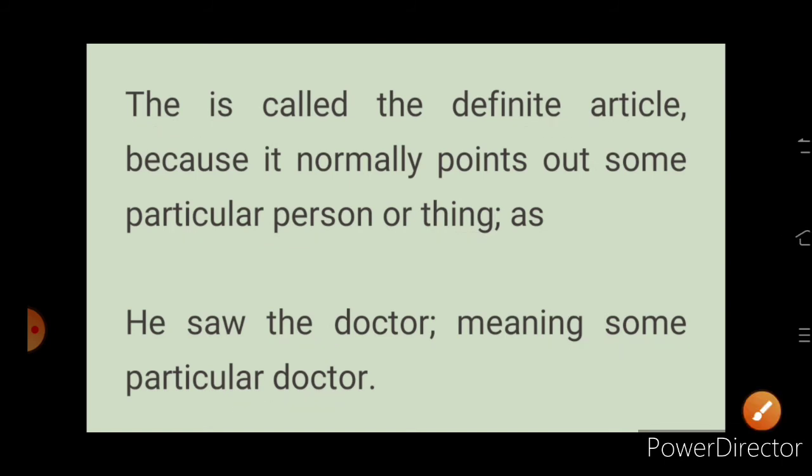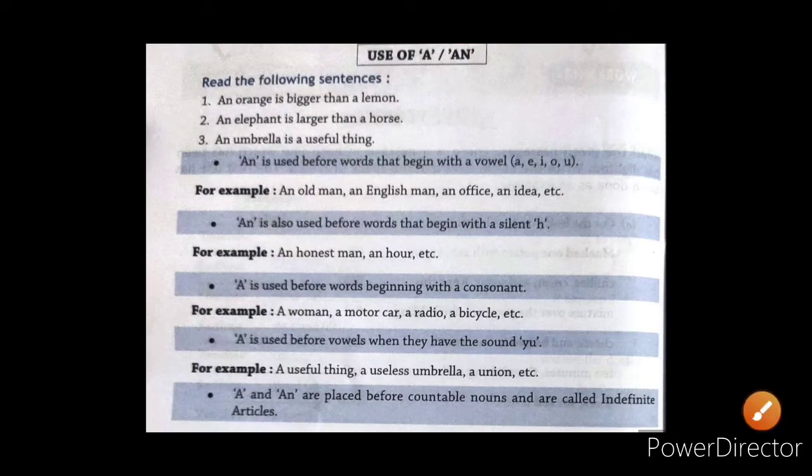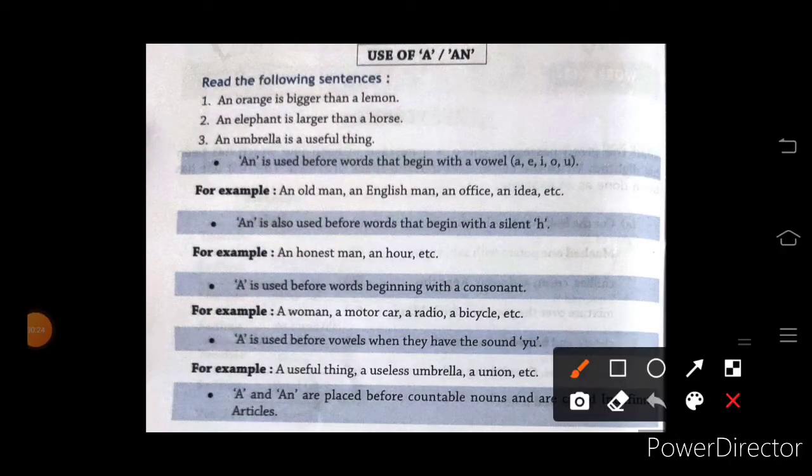Now moving to the uses of article. For example, here are some sentences: An orange is bigger than a lemon. An elephant is larger than a horse. An umbrella is useful. An is used before words that begin with vowels a-e-i-o-u.